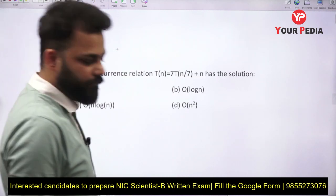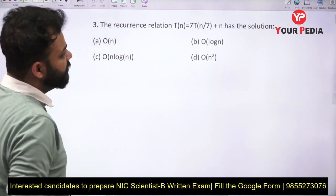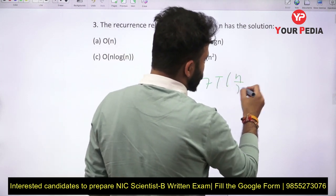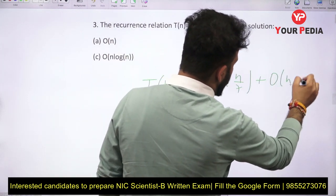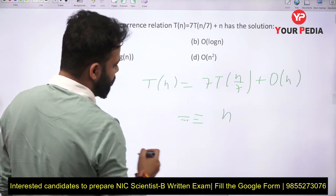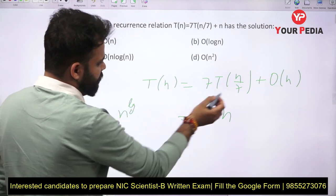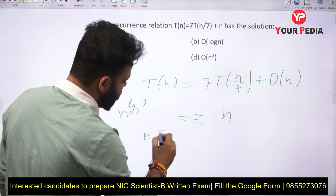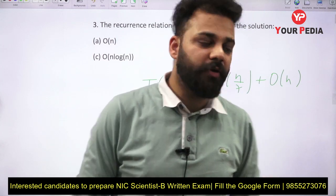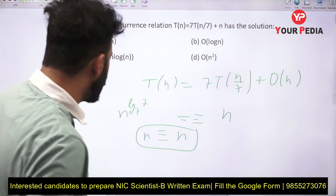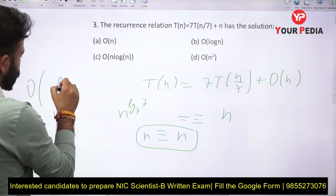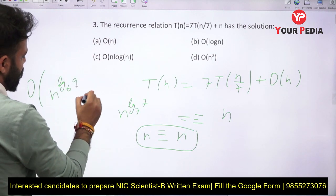The next question asks about the recurrence relation T(N) = 7T(N/7) + N. We apply the Master Theorem here. We compare the driving function N with N^(log_b a), which is N^(log₇ 7) = N^1 = N. Since both are asymptotically equal, this is the second case of the Master Theorem.